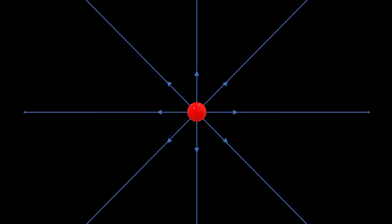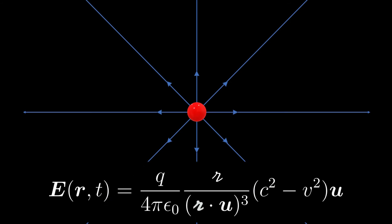Consider an electric charge that is moving at a constant speed. The electric field is shown. It is described by the electric field equation, where u is the velocity at which the electromagnetic information travels to the field position, and v is the velocity of the moving charge.